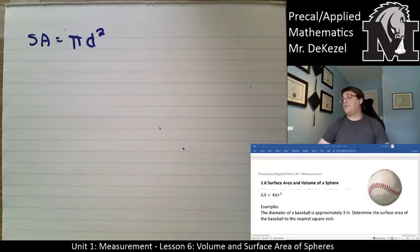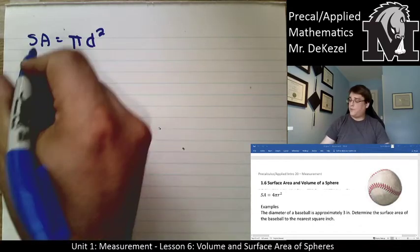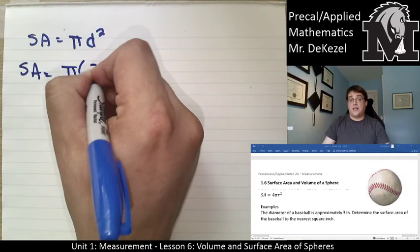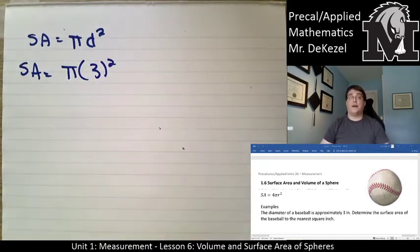So the first example given here: the diameter of a baseball is approximately 3 inches. Determine the surface area of the baseball to the nearest square inch. Because we're given diameter, let's use the diameter formula. Surface area equals π times the diameter of 3 squared. 3 squared is 9, and then π is right around 3. It's just over 3. So 9 times 3 is 27.